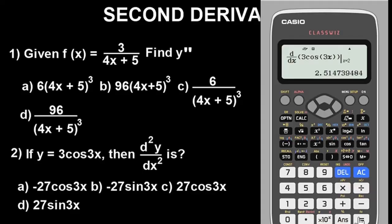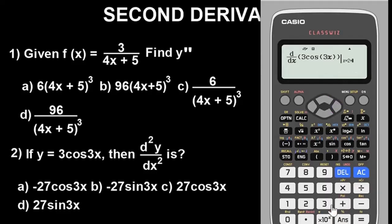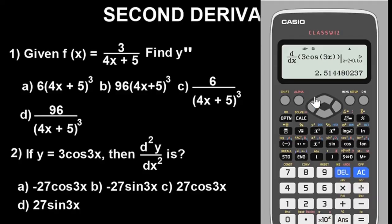Press equals and we get 2.55 — that's our first derivative value. Store this value as A: press Store then A. Now go back using the Up button, return to the differentiation expression, and add the constant plus 0.00001 — five zeros — to the x value.